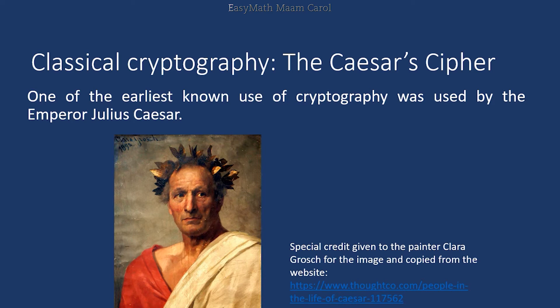Let us go back to our main topic: classical cryptography, which is the Caesar Cipher. One of the earliest known uses of cryptography was by the emperor Julius Caesar. Julius Caesar was from Rome, Italy, which was his seat of government. He wanted to conquer a large part of the world to build his empire, so he sent armies everywhere — conquering Egypt, the land of Cleopatra, parts of Europe, and areas of the Middle East and Asia. His empire was very large in ancient times.